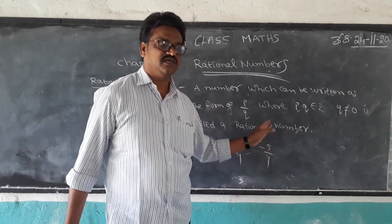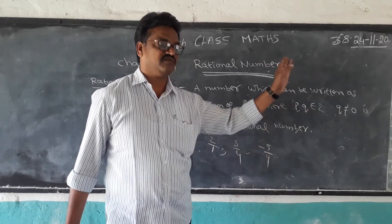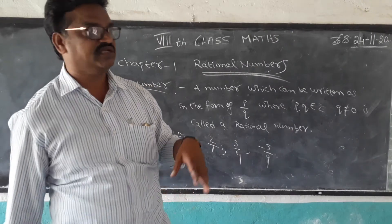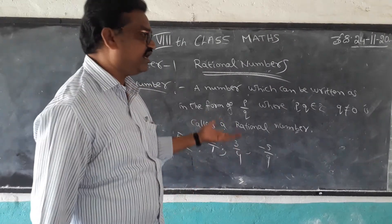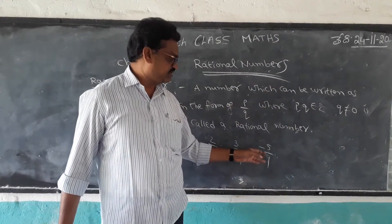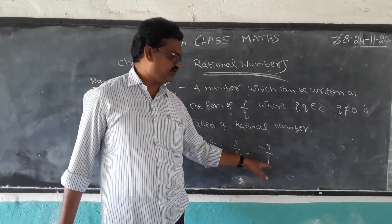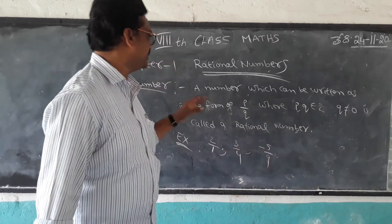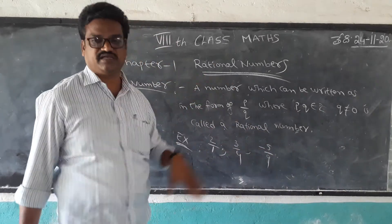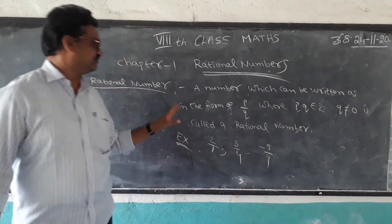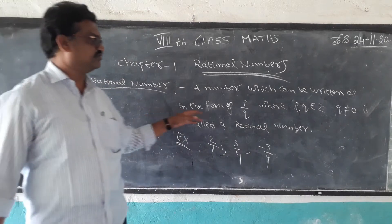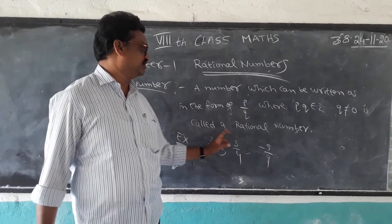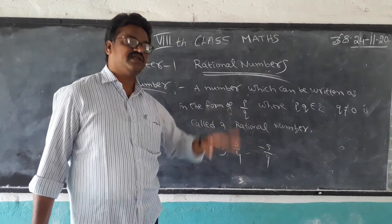Z means the set of integers: and so on, minus 3, minus 2, minus 1, 0, 1, 2, 3, and so on. Z includes all negative numbers, 0, and positive numbers. Therefore, minus 5 by 9 is also a rational number. A number which can be written in the form of P by Q, where P and Q belong to Z, and Q not equal to 0, is called a rational number.